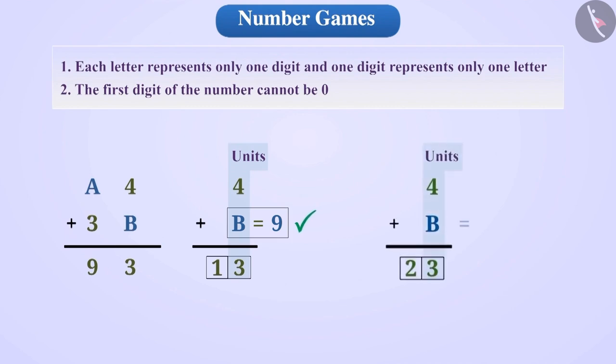Keep in mind that we cannot take the value of B as 19 because according to the rule, one letter represents only one digit and one digit represents only one letter. 19 is made up of two digits. So, we cannot take the value of B as 19.